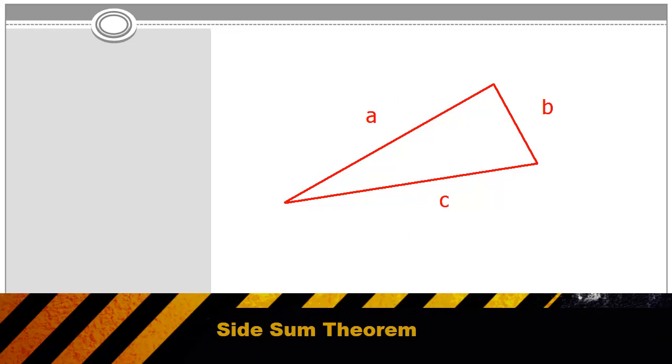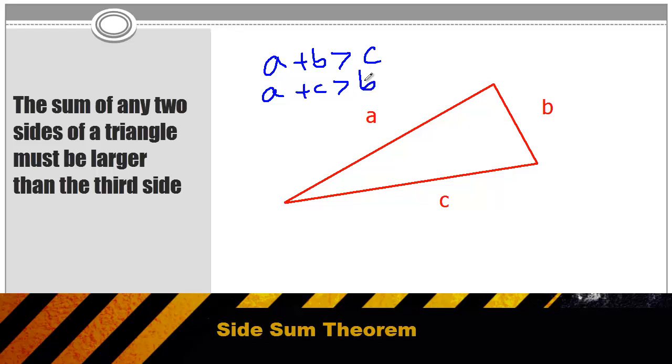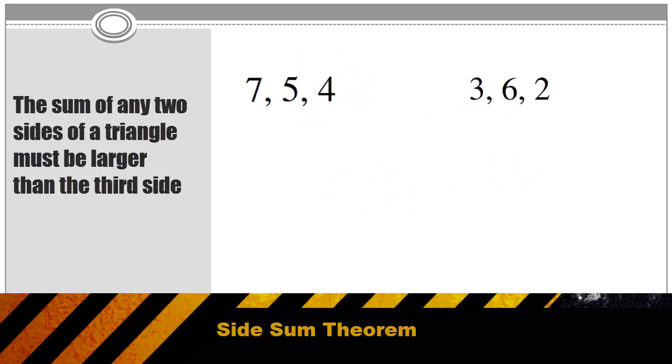The side sum theorem states that any two sides of any triangle, when added together, must be larger than the third side. So in this triangle, a plus b must be larger than c, and a plus c must be larger than b, and b plus c must be larger than a. So a question may give you two sets of numbers and ask you which set could be the sides of a triangle. And you can test those numbers with the side sum theorem.